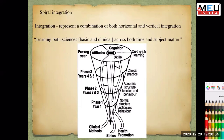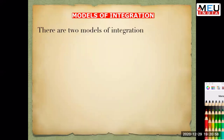There are two main models of integration commonly discussed: the Fogarty model and the Harden model. We will look at the common descriptions related to each and what type of integration is happening. Harden has 11 steps on the integration ladder and Fogarty has 10 ways to integrate the curriculum.